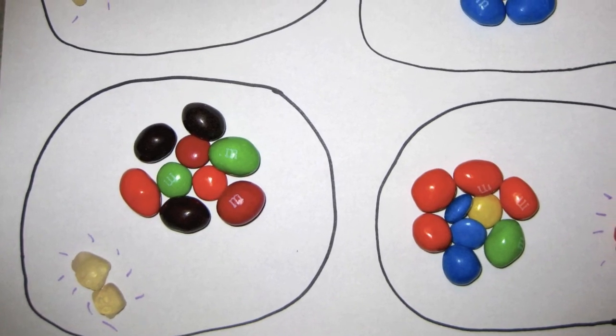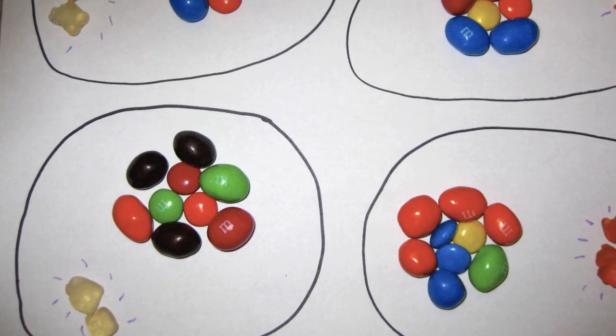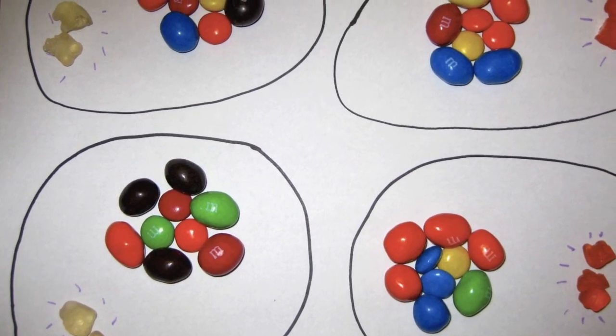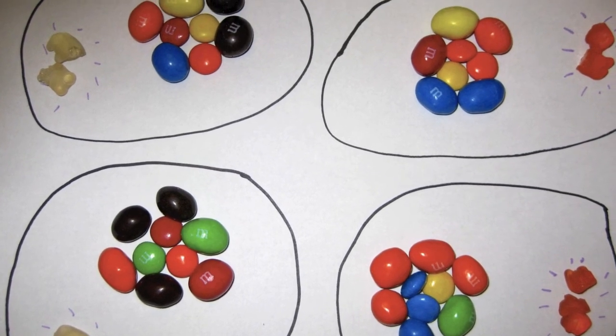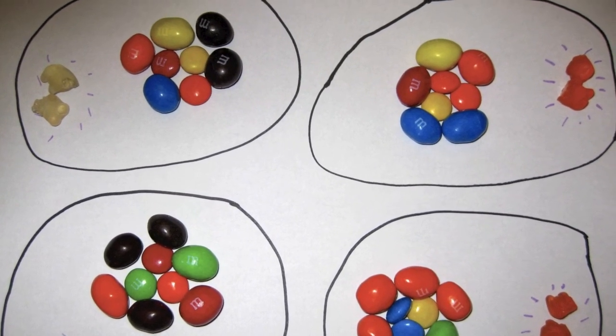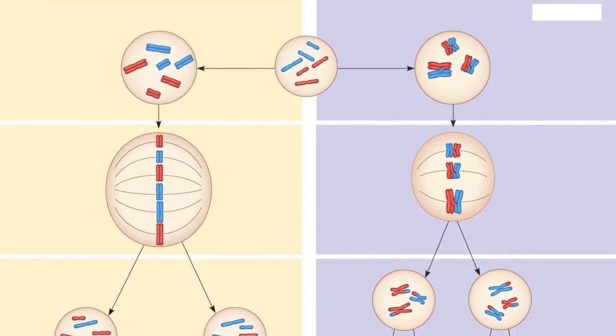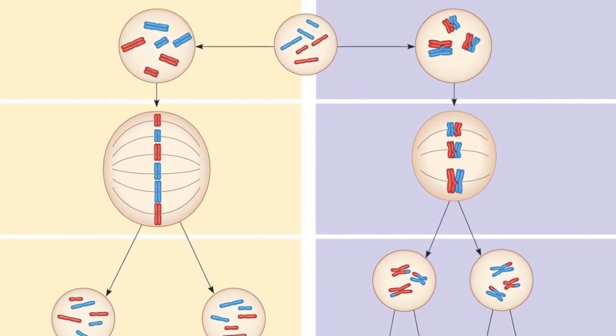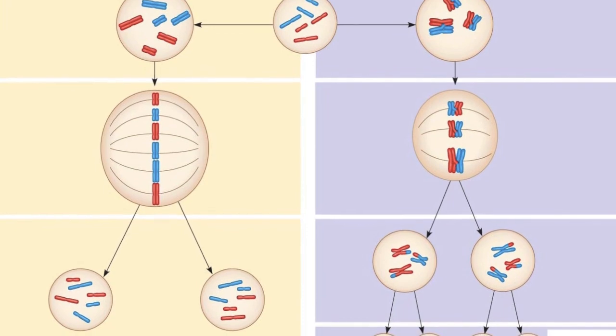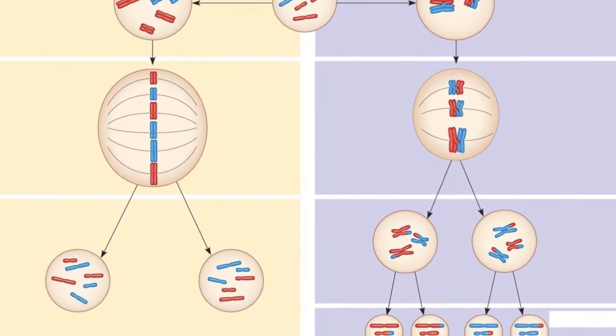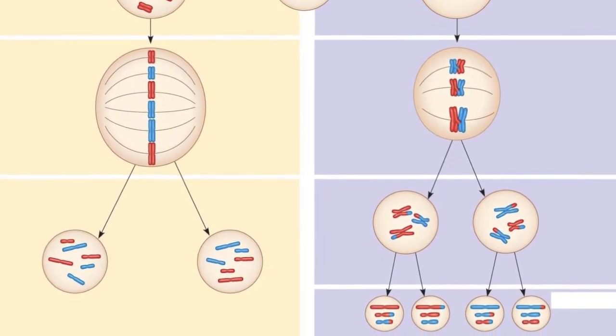The result of one meiotic division is the conversion of one diploid parent cell into four haploid daughter cells that are each genetically different from the parent cell. Each of these four daughter cells has half as many chromosomes as its parent cell. This is a major contrast to mitosis, where we get two cells with the same number of chromosomes as the parent cell.